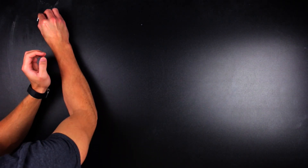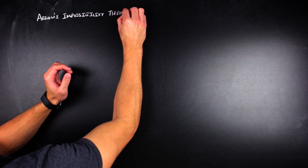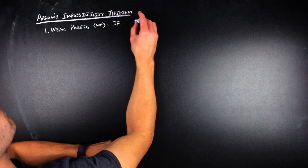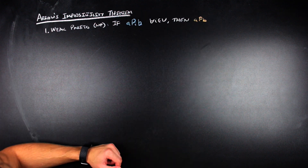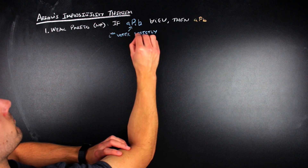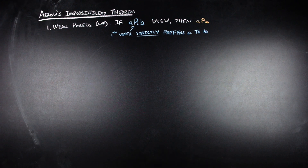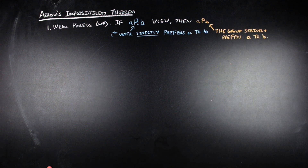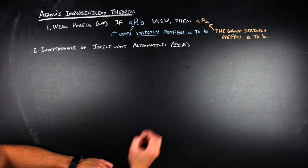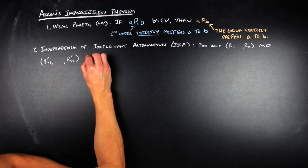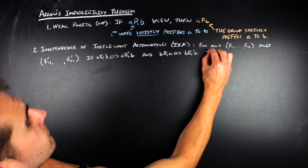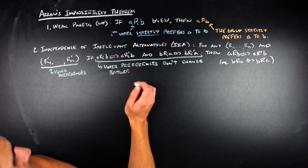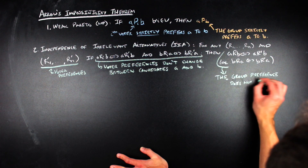In particular, the theorem states that there does not exist a ranked order voting system that elects a candidate from a set of three or more candidates that can satisfy the properties that: one, it's weak Pareto — which just means that if every voter strictly prefers candidate A to candidate B, then the collective group will strictly prefer candidate A to candidate B. Two, independence of irrelevant alternatives — so if every voter's preferences between A and B remains unchanged, then the collective group's preference between A and B will remain unchanged, even if voters' preferences between other pairs of candidates change.